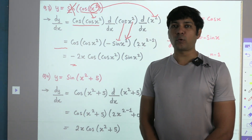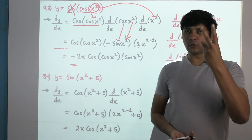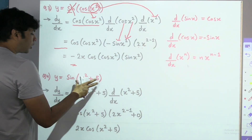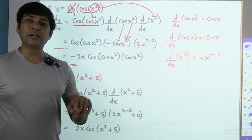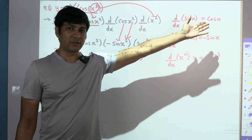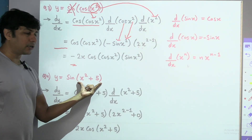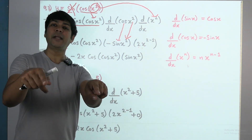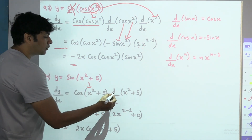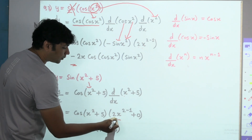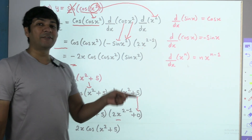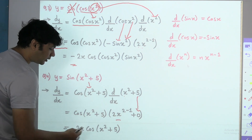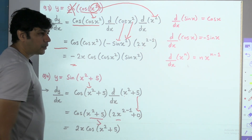Fourth question: y = sin(x² + 5) — a 2-level problem. Sin of whatever is in the bracket, the differentiation is cos of whatever is in the bracket, since we differentiate the bracket separately. Differentiation of x² is 2x and differentiation of constant 5 is 0. Write number first, algebra next, then trigonometry: answer is 2x · cos(x² + 5).